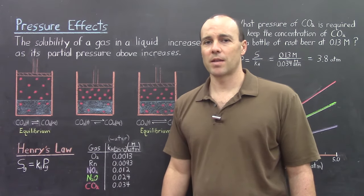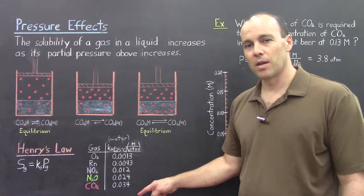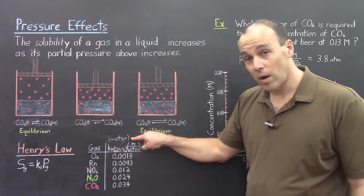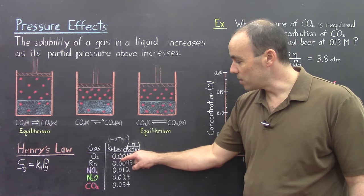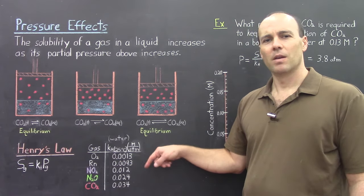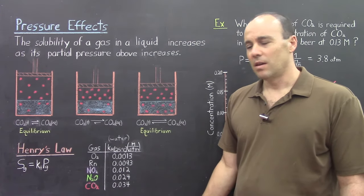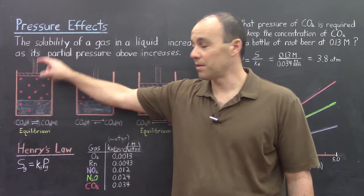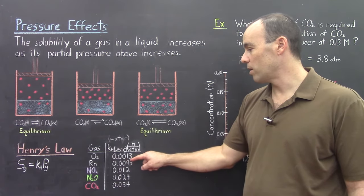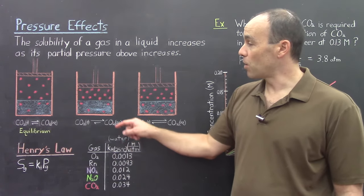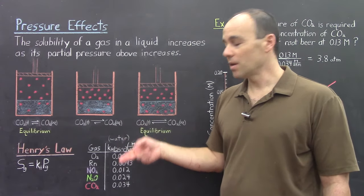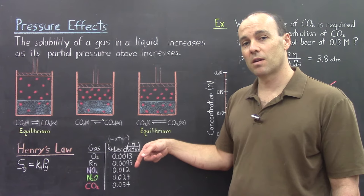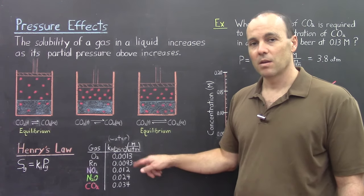The constant — Henry's Law constant — is different for the various gases. Oxygen, for instance, has a Henry's Law constant in water at 25°C of 0.0013 molarity per atmosphere. This means that if oxygen is trapped above water at a partial pressure of 1 atmosphere, the concentration dissolved would be 0.0013 M. If the partial pressure is doubled to 2 atmospheres, the concentration would be 0.0026 M, and if tripled, three times that much.